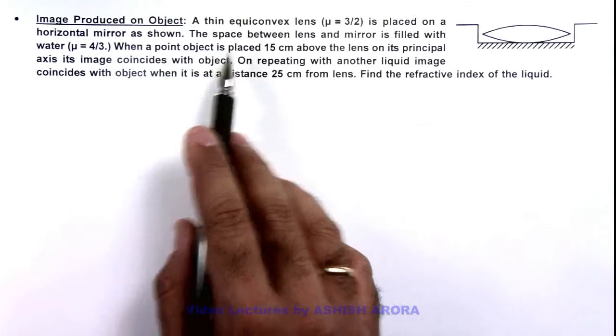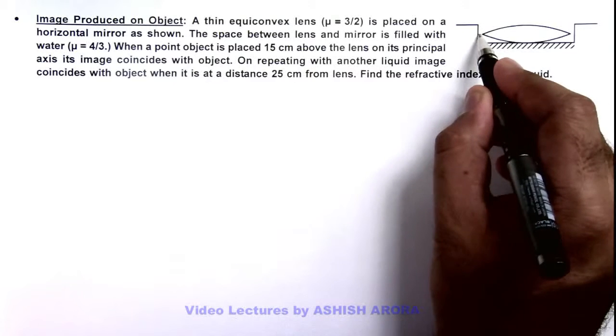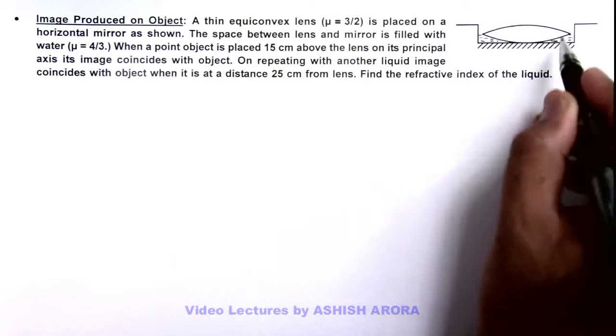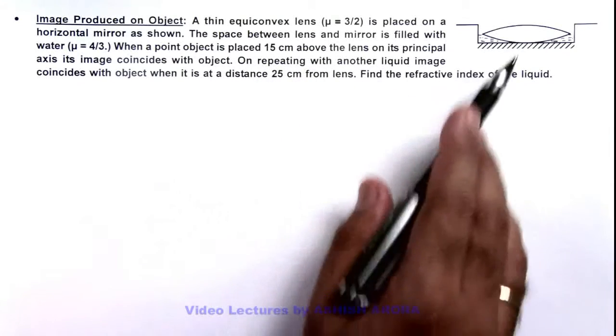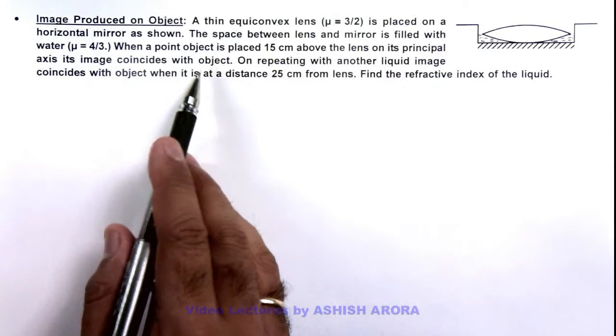And the space between lens and mirror is filled with water. Here you can see this space is filled with water. And when a point object is placed 15 centimeter above the lens on its principal axis, its image coincides with the object.